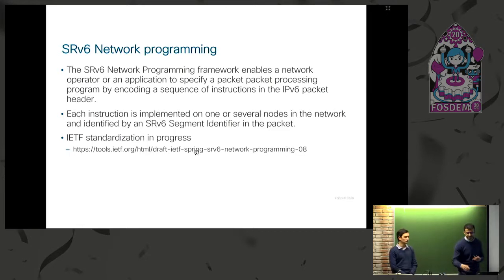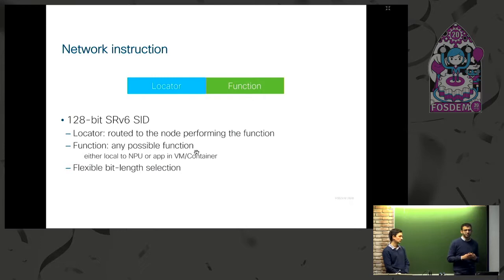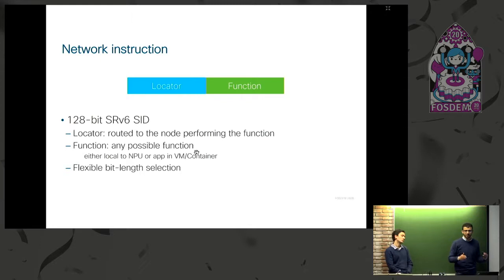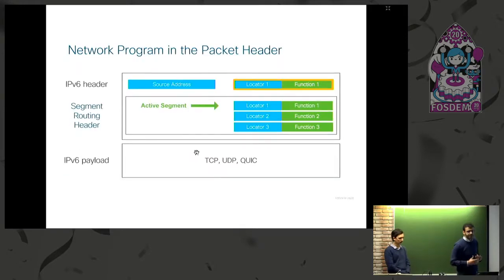To give more detail: an SRV6 segment, or SID, is basically an IPv6 address divided into two parts. The first part is the locator — which node should process the packet. The second part is the function — which function should be executed on the packet at that node.